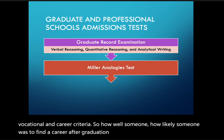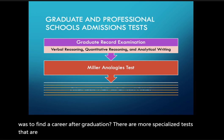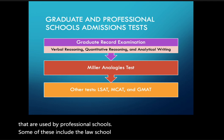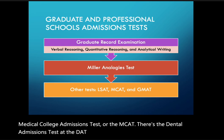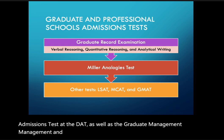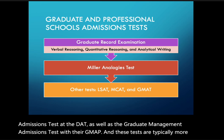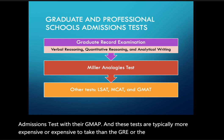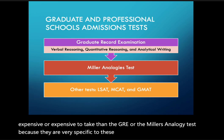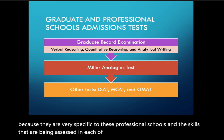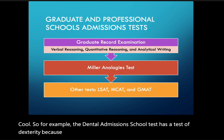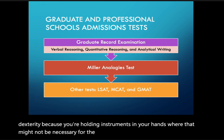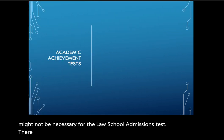There are more specialized tests used by professional schools. These include the Law School Admissions Test (LSAT), the Medical College Admissions Test (MCAT), the Dental Admissions Test (DAT), and the Graduate Management Admissions Test (GMAT). These tests are typically more expensive to take than the GRE or Miller Analogies Test because they are specific to their professional schools. The skills assessed vary — for example, the dental admissions test includes a dexterity component.